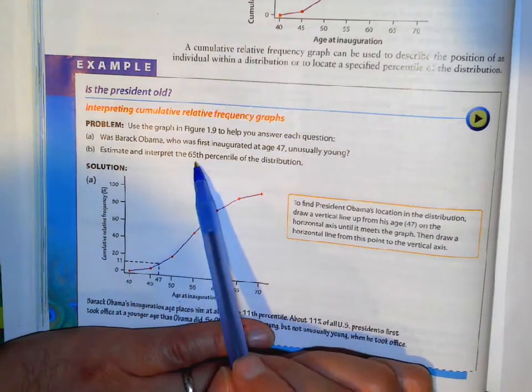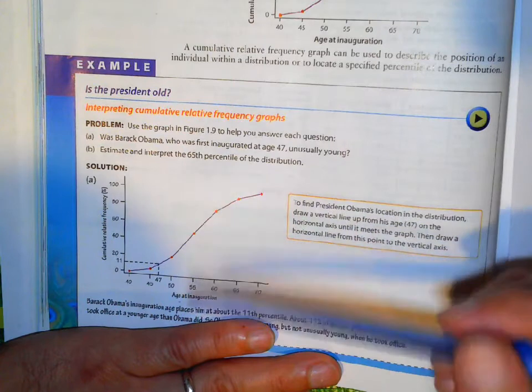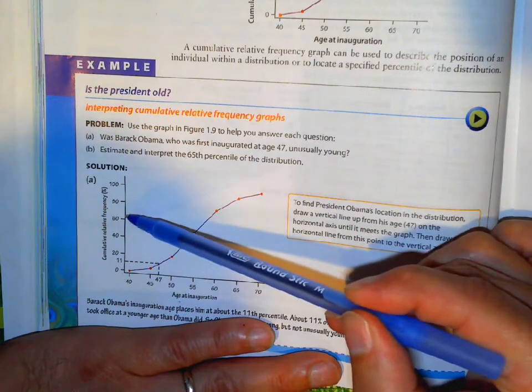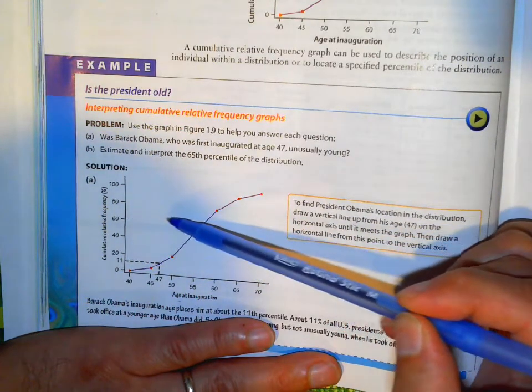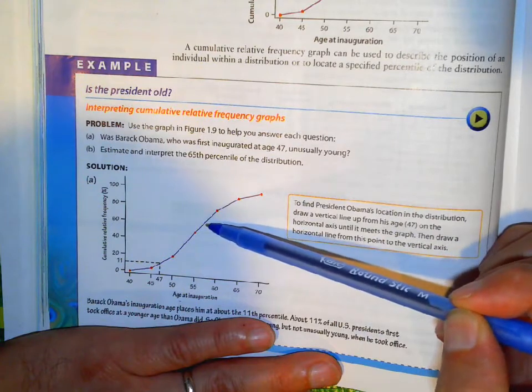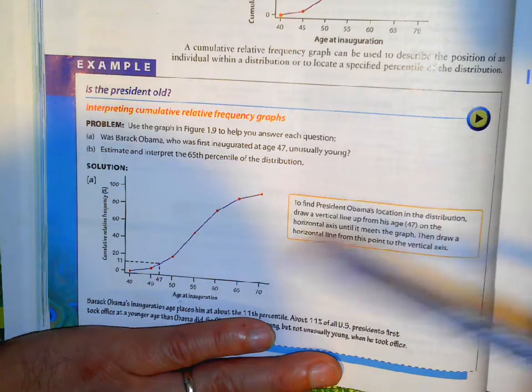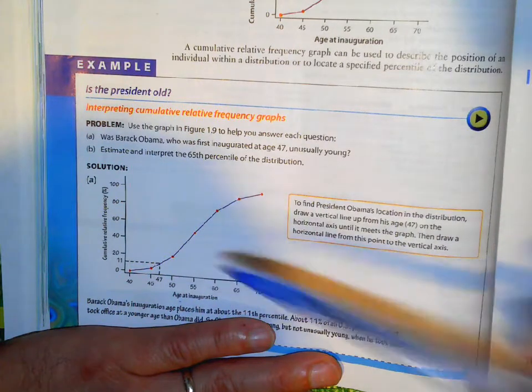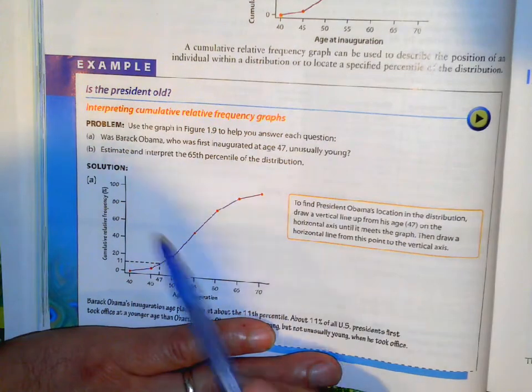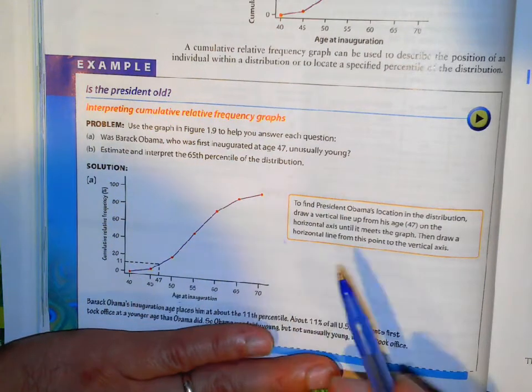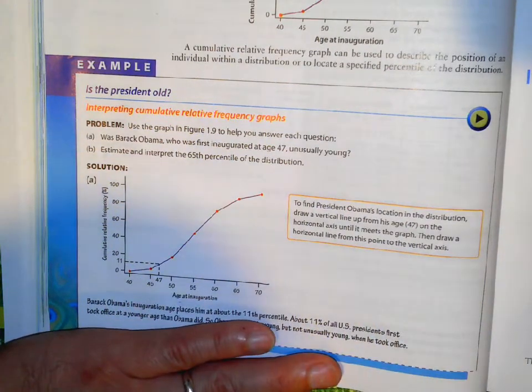Now if I want to know the 65th percentile, what age would that be? Think about 65th percentile, come over here, come on down here. I don't know, maybe about 57, something like that there. So that's how you interpret your cumulative frequency.